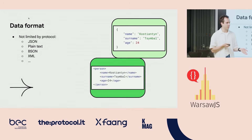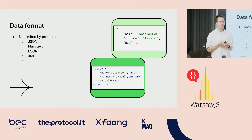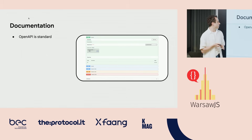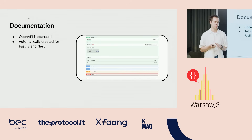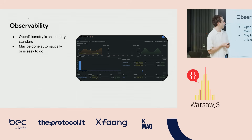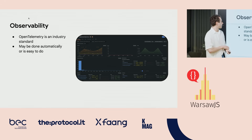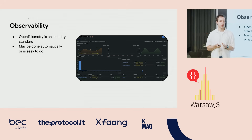Data format: you can use whatever you need, it's not limited by protocol. You can use JSON or XML — JSON is the most used. If performance is key, you can use some ways to make it smaller. And documentation — everybody wants to have some documentation for their service. It's done automatically for Fastify and Nest. I remember we were trying to create it for Koa and it was a bit tough, because Koa is not natively for TypeScript and we had to play around it.